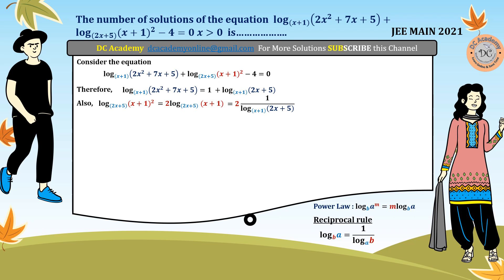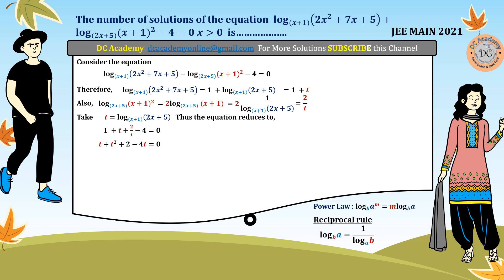Notice that log(2x+5) with base (x+1) is common in both terms. So we let t = log(2x+5) with base (x+1). The first term becomes (1 + t) and the second term becomes (2/t). The original equation now simplifies to: (1 + t) + (2/t) - 4 = 0. Multiplying both sides by t gives: t + t² + 2 - 4t = 0.